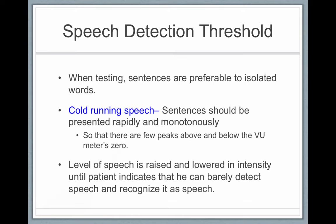When testing, sentences are used — they're better than isolated words. Cold running speech is used and sentences should be presented rapidly and monotonously, without peaks in your voice. For example: Monday, Tuesday, Wednesday, Thursday, Friday — slowly raising the volume. As soon as the subject hears that there's speech, they signal that they detected it. They don't need to tell me what words I used, just signal that they detected speech.